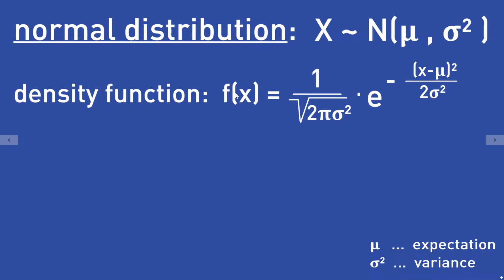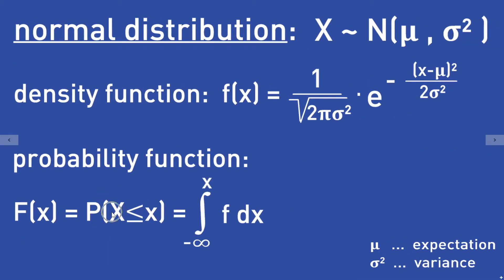The probability density function depends on the expectation mu and the variance sigma squared. The probability that the random number x is smaller or equal to a real number small x is given by the integral from minus infinity to small x of this density function f. The function f is the density function we have defined here.